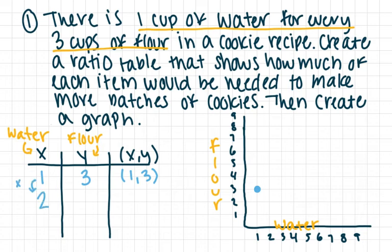What if I had two cups of water? Well, one times two is two, so three times two would be six. Meaning if I had two cups of water, I would have six cups of flour. So my next point is going to be at two, six. So over two to the right and then up six, right there.